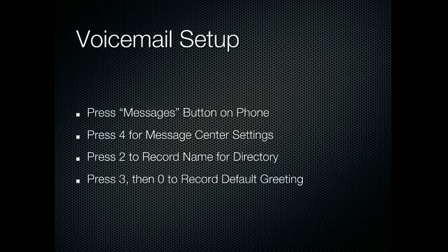The first thing you'll want to do is go to Voicemail Setup. To do that, you'll press the Messages button on your phone. Enter your password followed by a pound. Then go to 4 for Message Center Settings. Press 2 to record your name for the directory. This step is very important — if you don't do that, you will not show up in the dial-by-name directory or the staff directory.